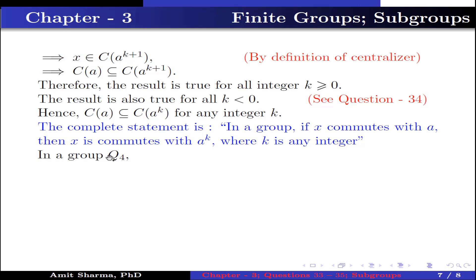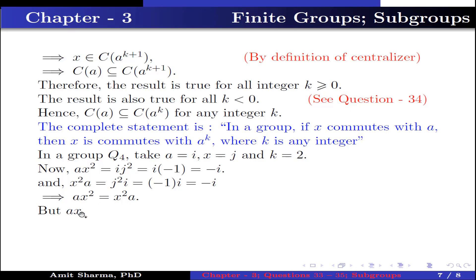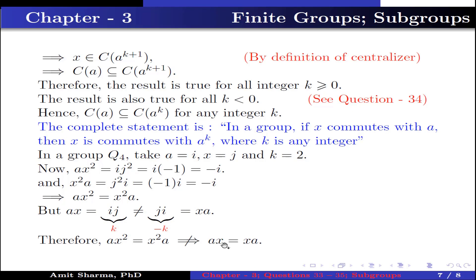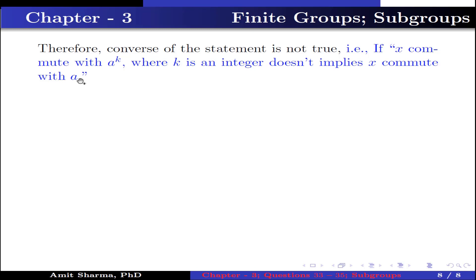To check whether the converse is true, take the quaternion group Q₈ with A = i, x = j, and k = 2. Then A·x² = i·j² = i·(−1) = −i, and x²·A = j²·i = (−1)·i = −i. So Ax² = x²A. But Ax = ij = k ≠ −k = ji = xA, so Ax ≠ xA. Therefore Ax² = x²A does not imply Ax = xA, and the converse is not true: x commuting with Aᵏ does not imply x commutes with A.